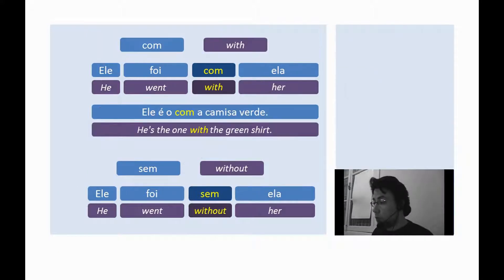Now, the preposition com. Com. That is usually translated as with. Examples. Ele foi com ela. He went with her. Ele é o com a camisa verde. He is the one with the green shirt.